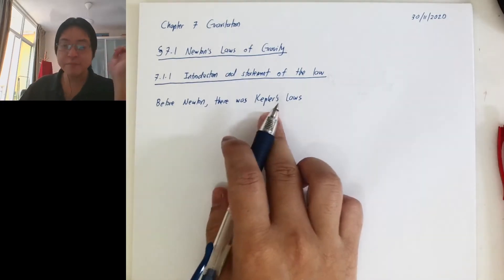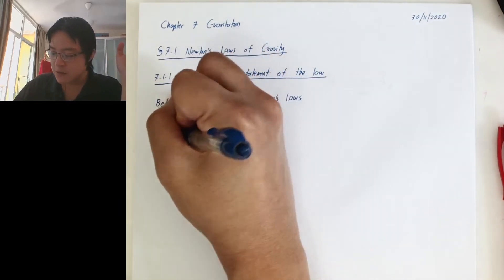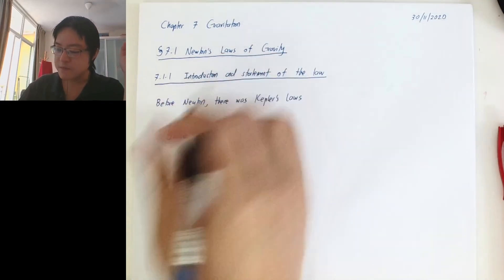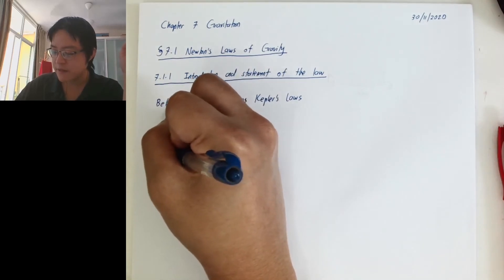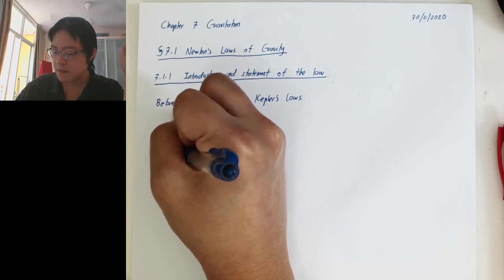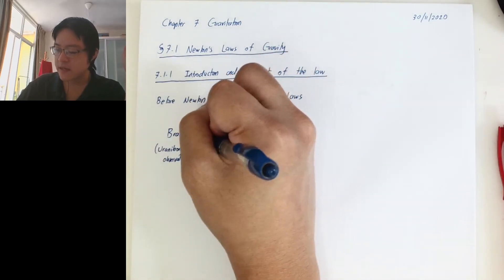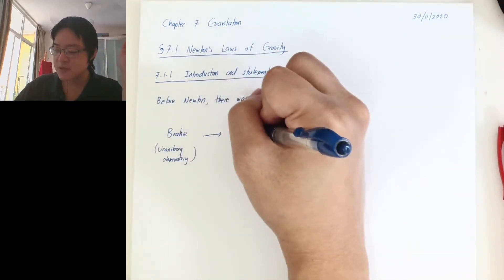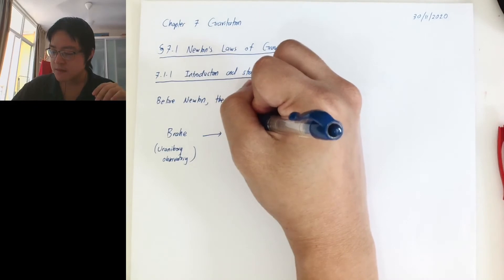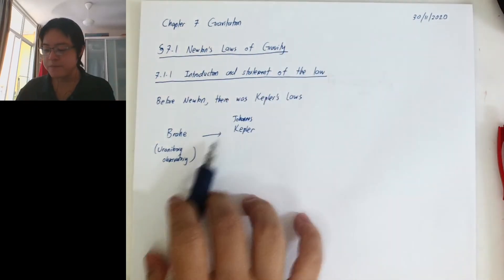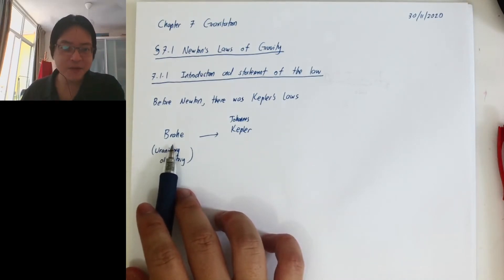Before Newton came along, we already had Kepler's Law. The story of Kepler is actually kind of very interesting. Before Kepler, there was Tycho Brahe — Brahe was like the boss of Kepler. They were at what I think was called the Uraniburg Observatory, I think in Denmark. Kepler was the staff or student there. This is Johannes Kepler.